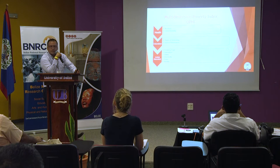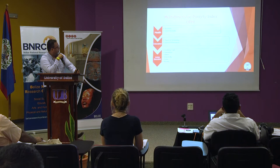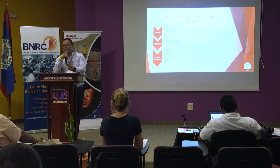Under the MPI, health indicators include nutrition and child mortality. Education indicators cover years of schooling and school attendance. Living standard indicators include cooking fuel, sanitation, water, electricity, floor quality, and assets.